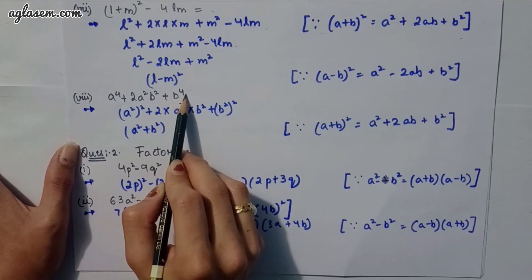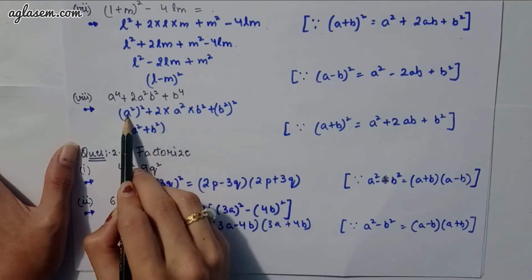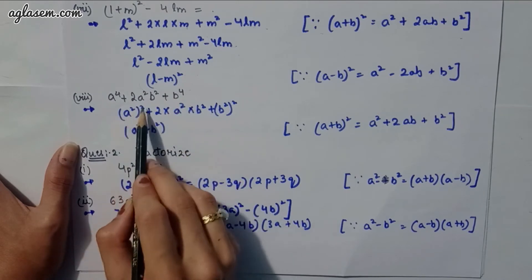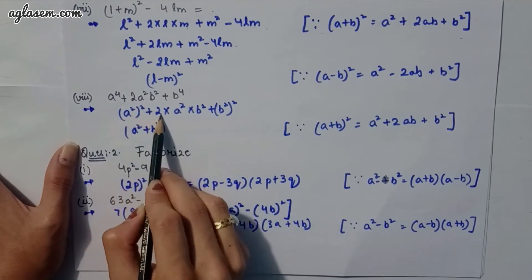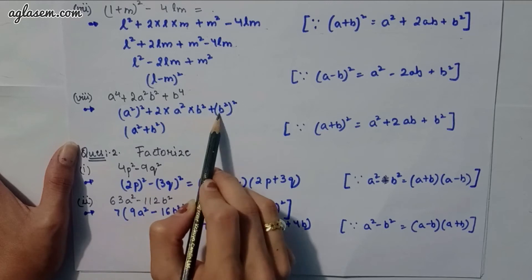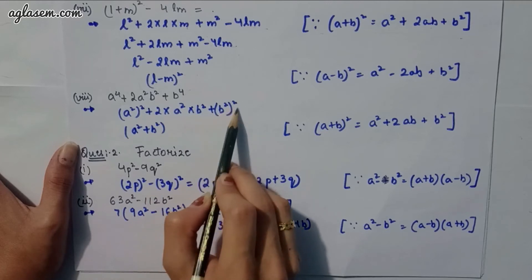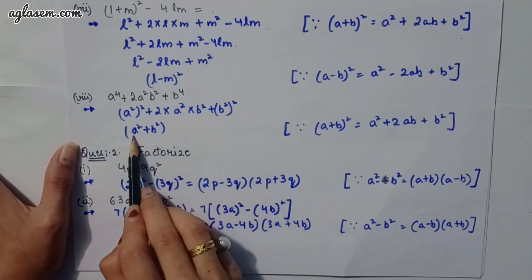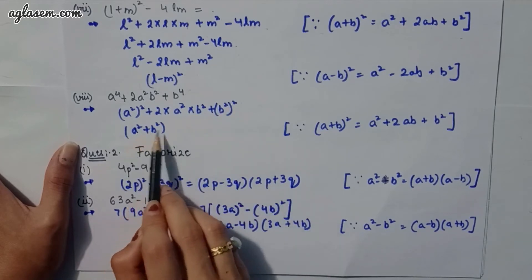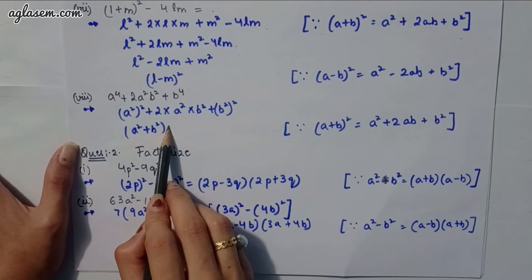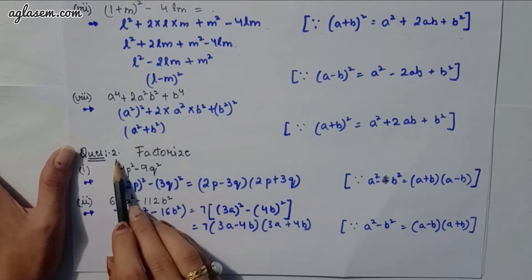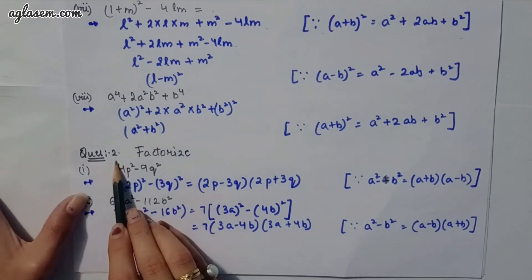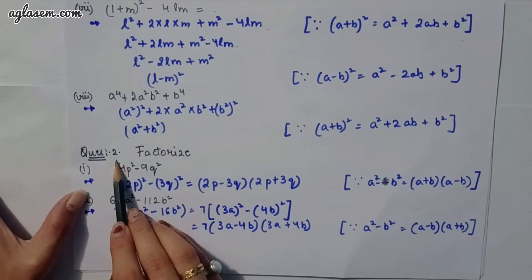Eighth part: a⁴ + 2a²b² + b⁴. We write this as (a²)² + 2·a²·b² + (b²)², which gives (a² + b²)².